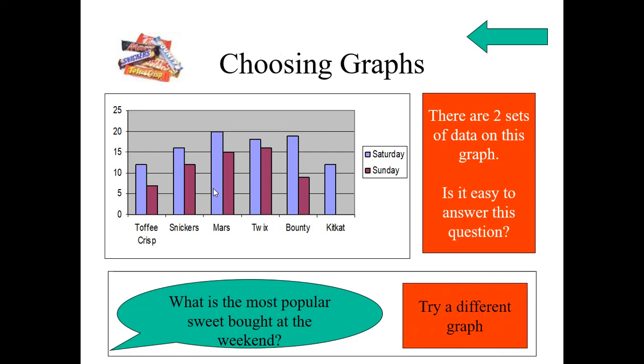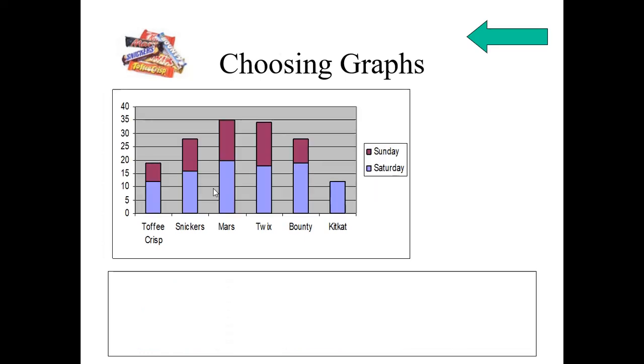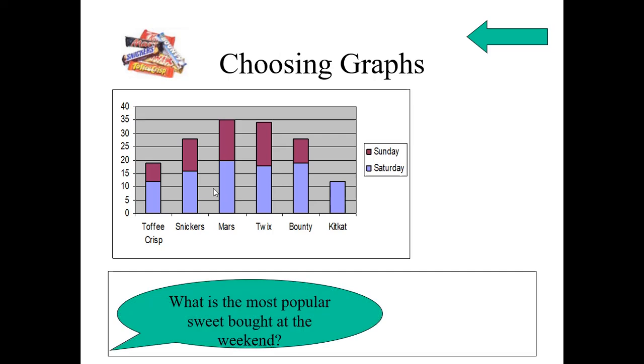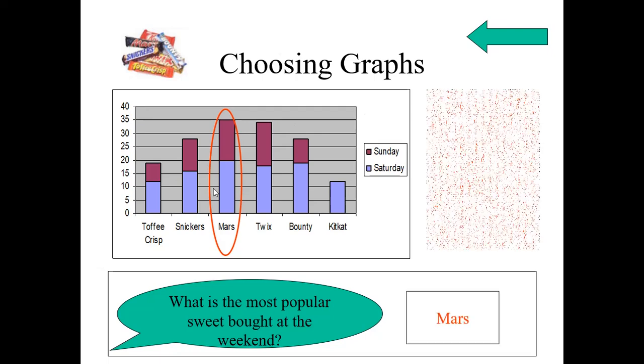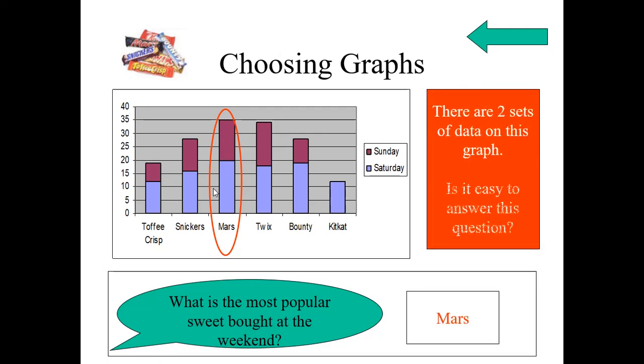Let us change this graph. Try a different graph. See now. We have given two things. Sunday with violet color, Saturday with blue color. Now, what is the most popular sweet? Which is one more highest 35 that is Mars. Now, we rounded here. So, the most popular sweet bought at the weekend, Mars. In this way, we can answer the questions for anything by showing in the graph.